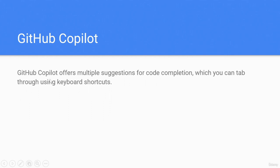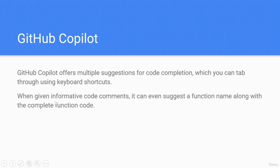GitHub Copilot offers multiple suggestions for code completion which you can tap through using keyboard shortcuts. When given informative code comments, it can even suggest a function name along with the complete function code. Thanks for watching.